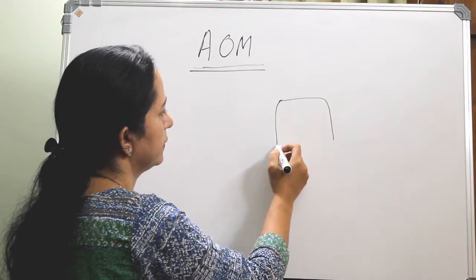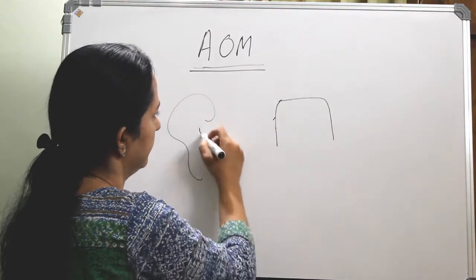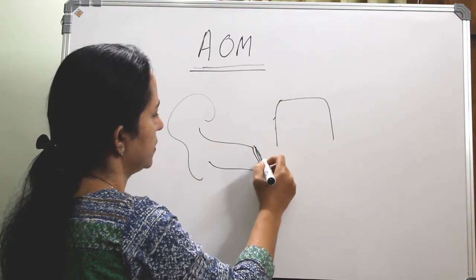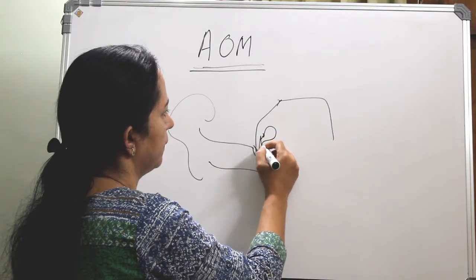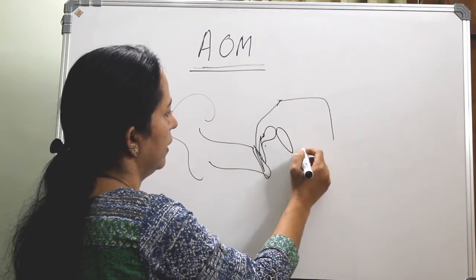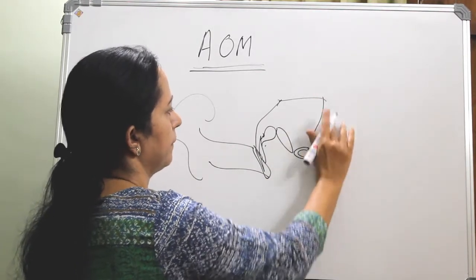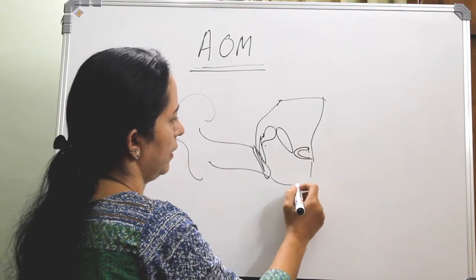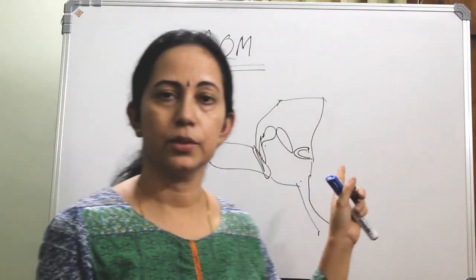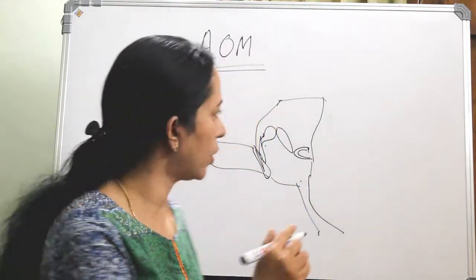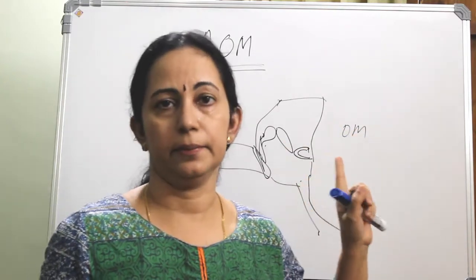What is acute otitis media? In the middle ear, this is the tympanic membrane, your malleus, incus and stapes assembly, and anteriorly the eustachian tube comes in. Otitis media is inflammation of the middle ear cleft.